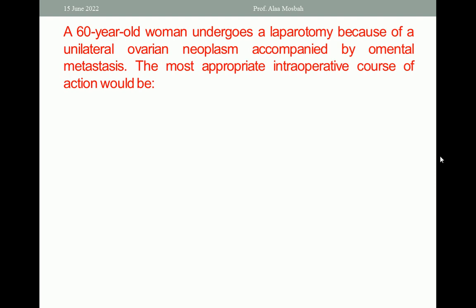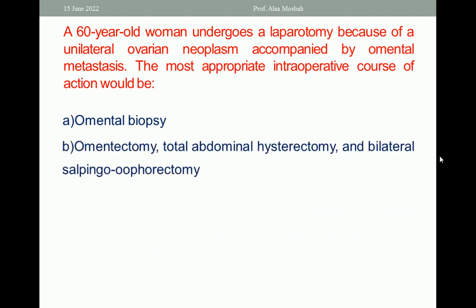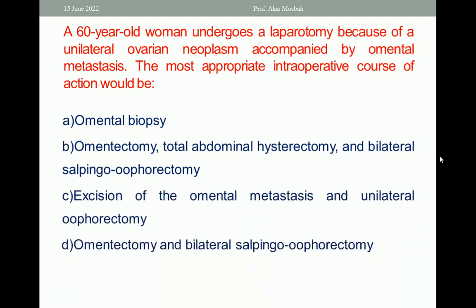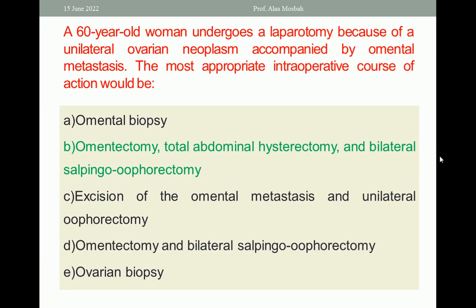A 60-year-old woman undergoes laparotomy because of a unilateral ovarian neoplasm accompanied by omental metastasis. The most appropriate intraoperative course of action would be: A. omental biopsy; B. omentectomy, total abdominal hysterectomy, and bilateral salpingo-oophorectomy; C. excision of the omental metastasis and unilateral oophorectomy; D. omentectomy and bilateral salpingo-oophorectomy; E. ovarian biopsy. The one best response here is B — omentectomy, total abdominal hysterectomy, and bilateral salpingo-oophorectomy.